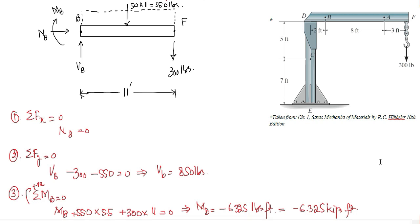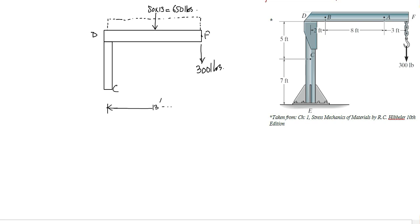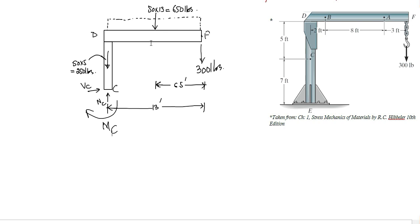Now we are going to determine the resultant internal loadings at point C. We will cut the member at point C and take the upper portion. The self-weight of the boom TF is 50 pounds per foot — so for 13 feet, it would be 650 pounds. Similarly, the column has a self-weight of 50 pounds per foot — for 5 feet up to point C, it will be 250 pounds.